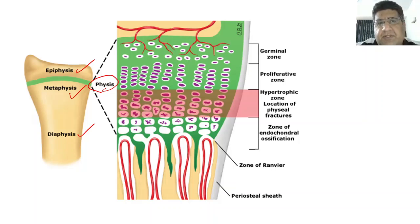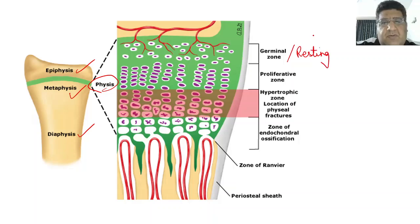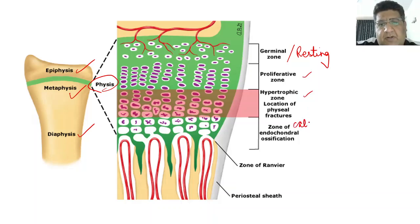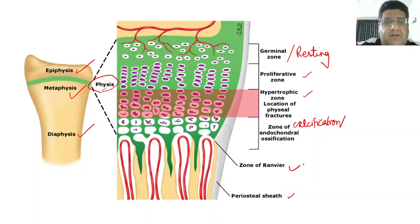When we talk about the structure, there are five very important layers in this area. First is called the resting zone or the germinal zone. Then you have the proliferative zone, then the hypertrophic zone, then the zone of calcification or zone of ossification, and then of course the zone of Ranvier, and then the periosteal sheet.